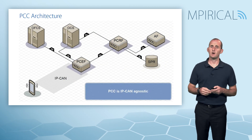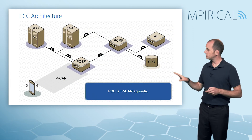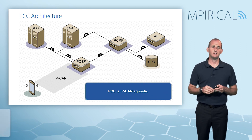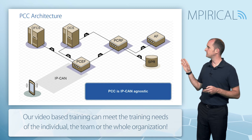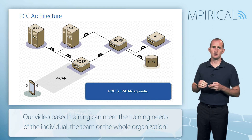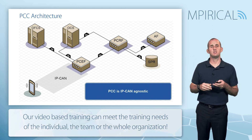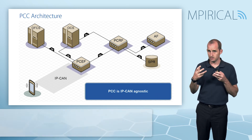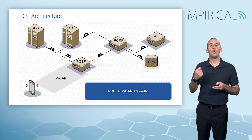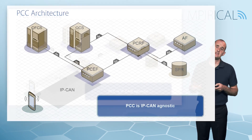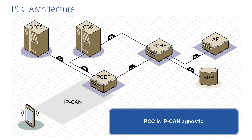The final part of our map to cover is a note on the IP connectivity access network. Policy and charging control is IP CAN agnostic. Although we often talk about PCC in the context of LTE — whereby LTE would be the IP CAN — that's not always the case. PCC can apply to GPRS and it can also apply to non-3GPP architectures as well, like DSL or even cable.